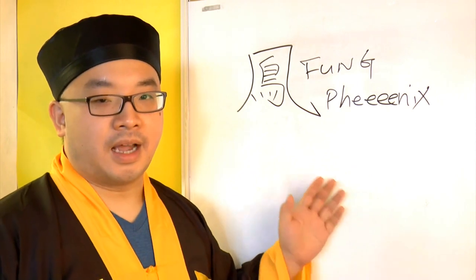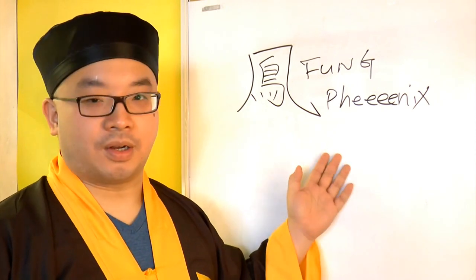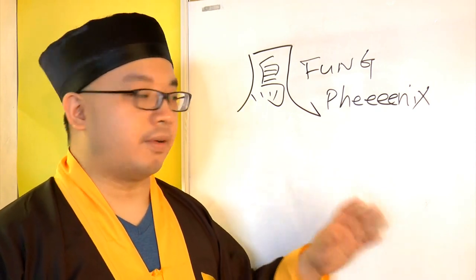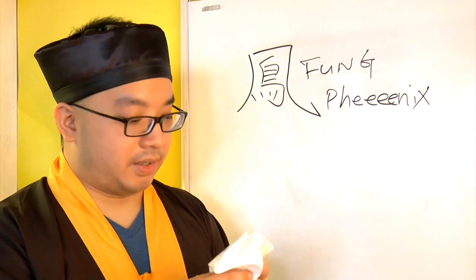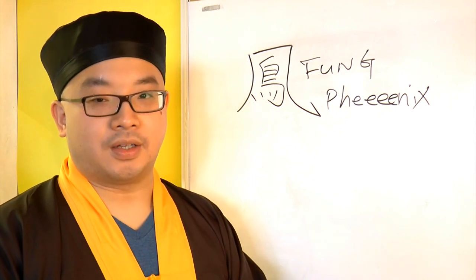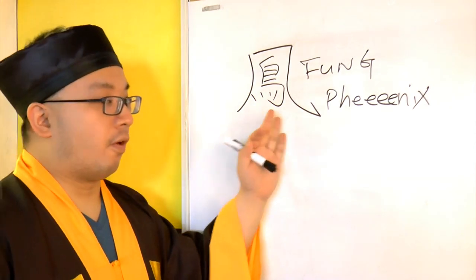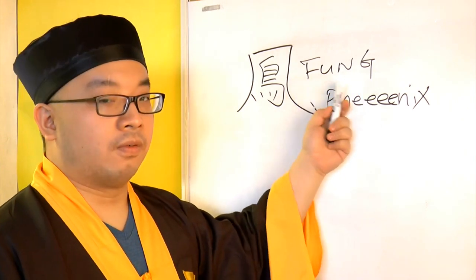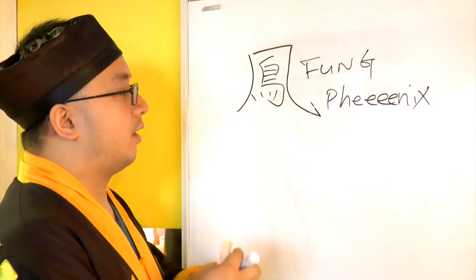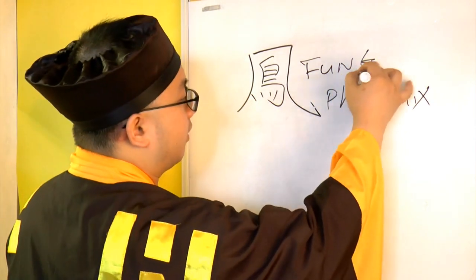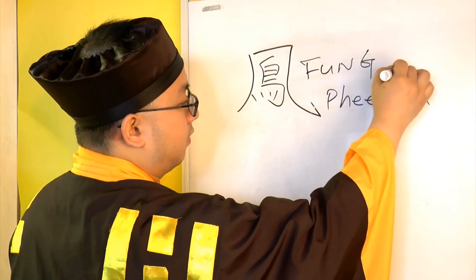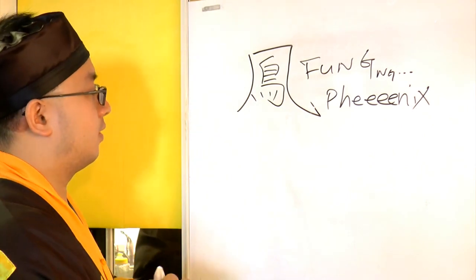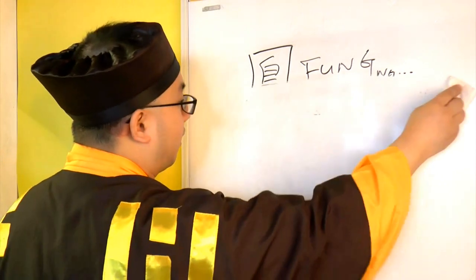Let us decode this with the same grid we have been using throughout the whole series so you can understand. Phoenix — Fung — let's learn how to say it. There's a little N sound: Fung. Okay, so we're done with that. Let's get on with the grid.